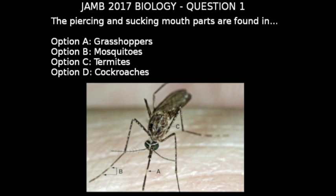From our diagram, the mouthpart labelled A is called the proboscis. With the proboscis, the mosquito is able to pierce through the skin and suck blood. Therefore, mosquito is the correct answer — option B.